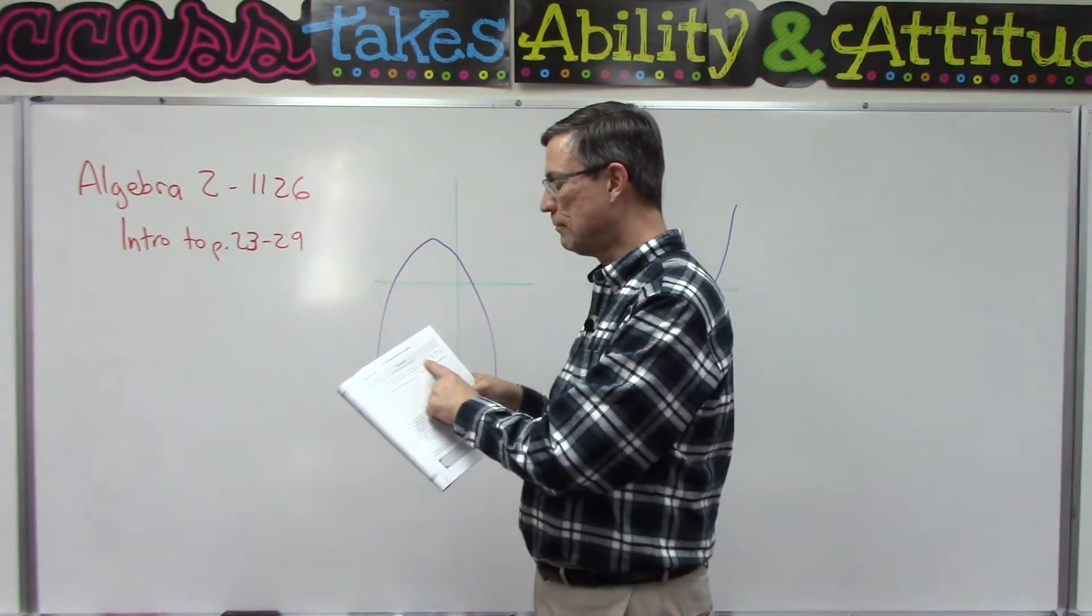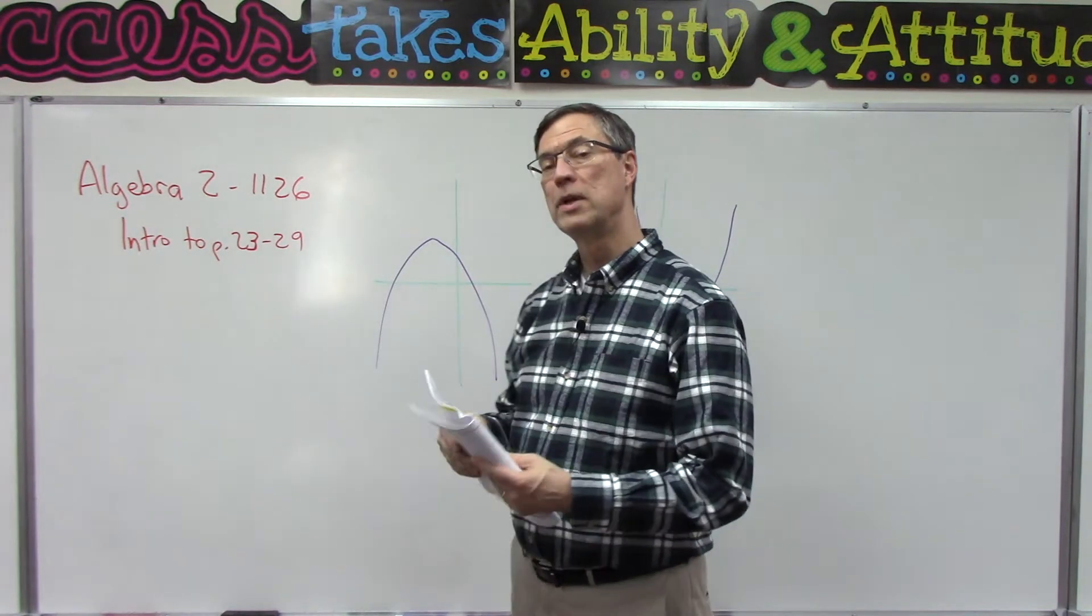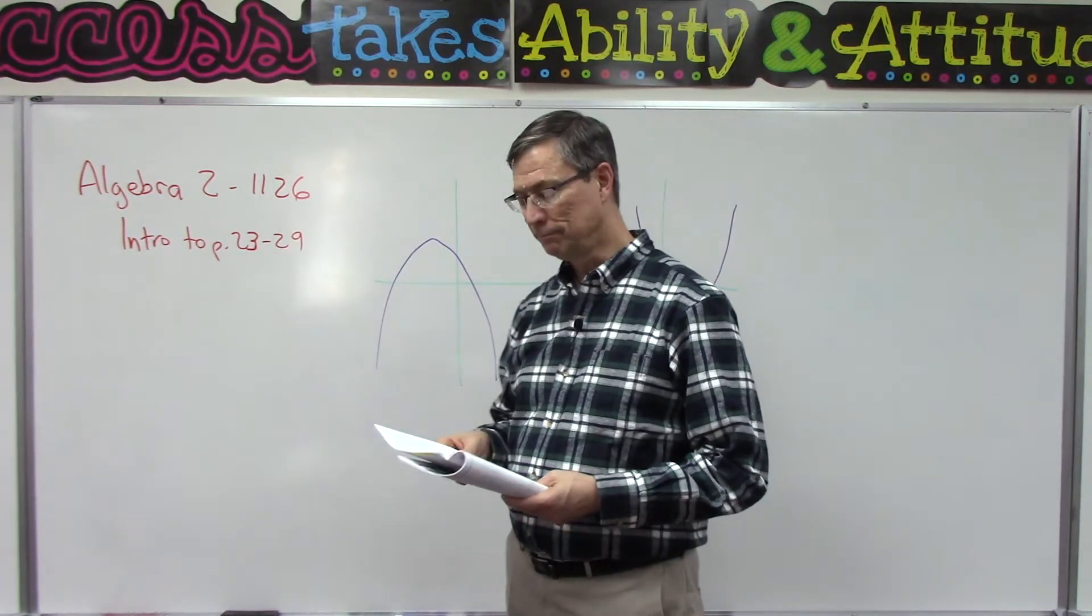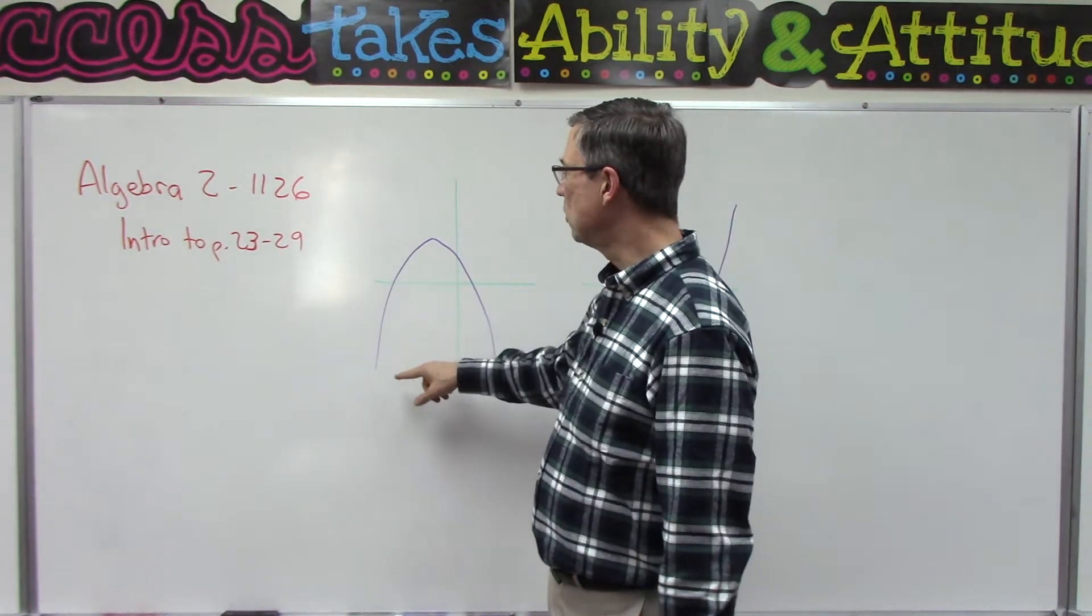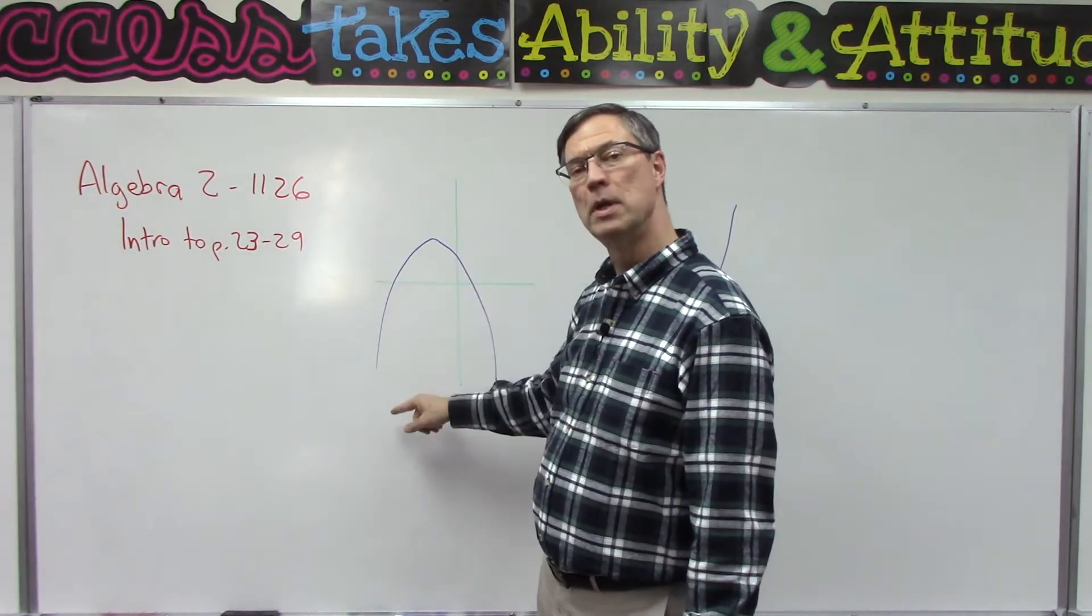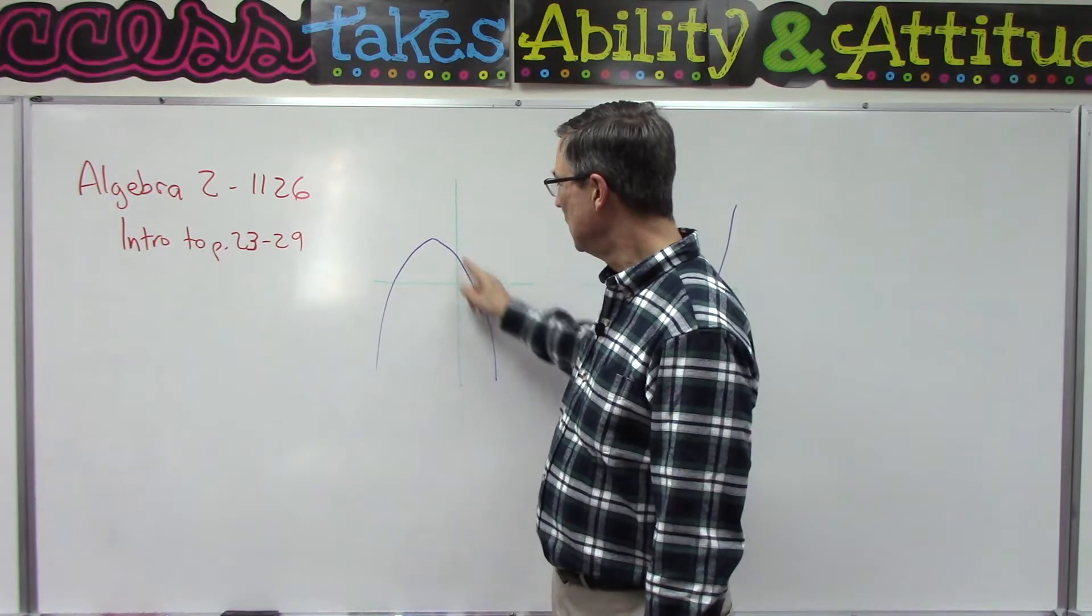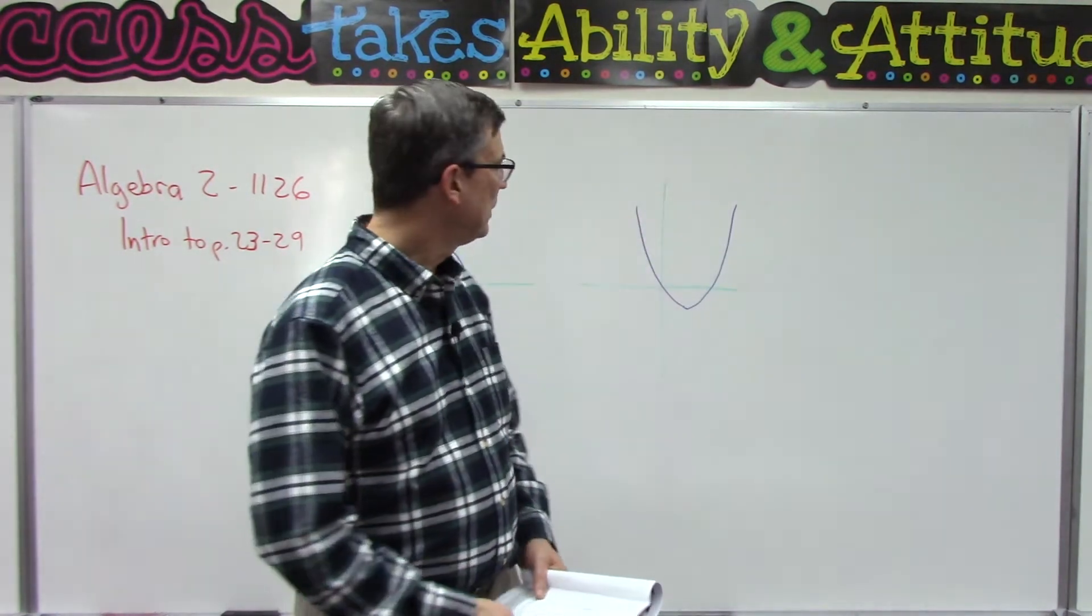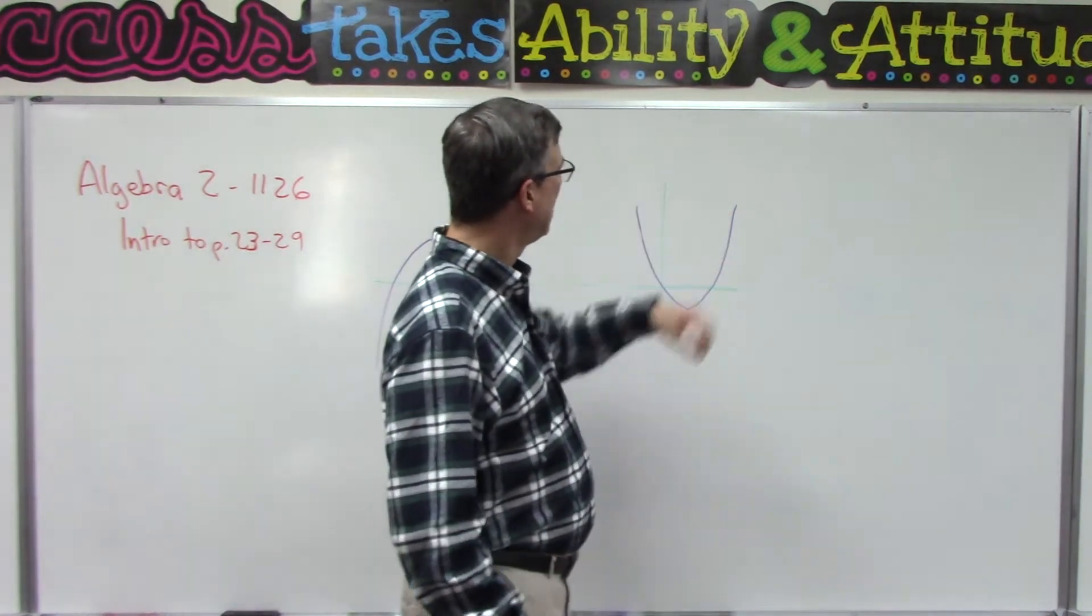When we go to graph it, we're going to find that it's always going to look like a missile cone. See how that looks kind of like the tip of a missile? Sometimes it's facing up like that or sometimes it's facing down.